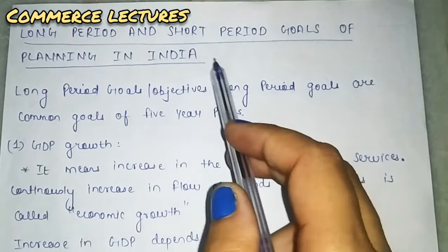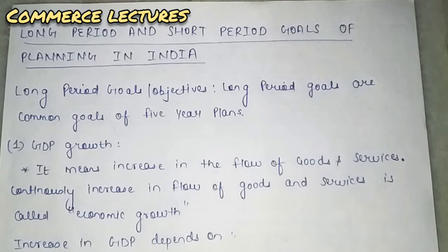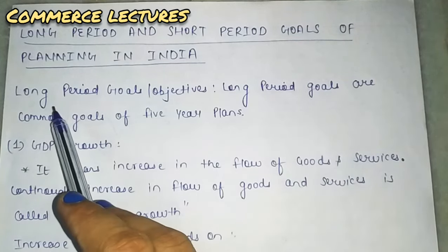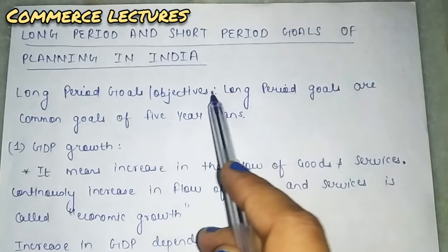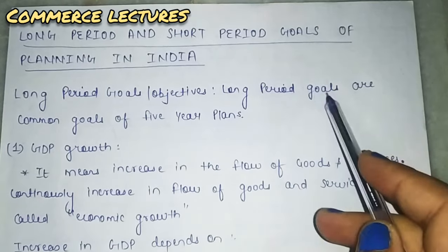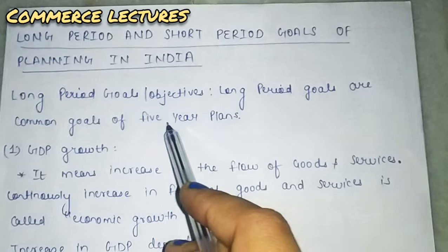What are long period and short period goals? Long period goals are made for the long term, and for them, short term goals are also made. Long period goals are common goals, also known as five year plans.